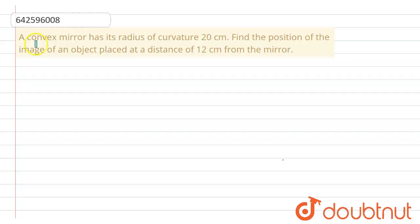In this problem, we have given that a convex mirror has its radius of curvature 20 centimeters. We have to find the position of the image of an object placed at a distance of 12 centimeters from the mirror.